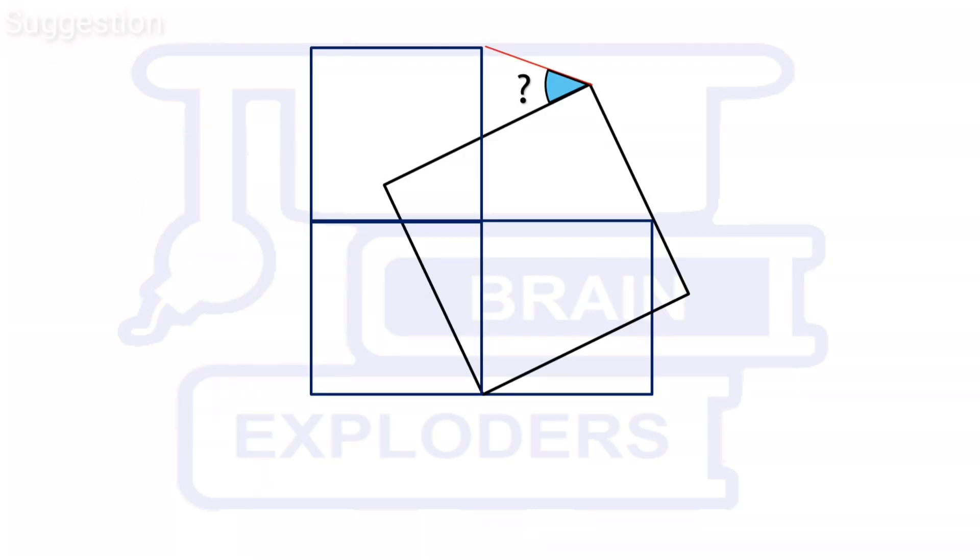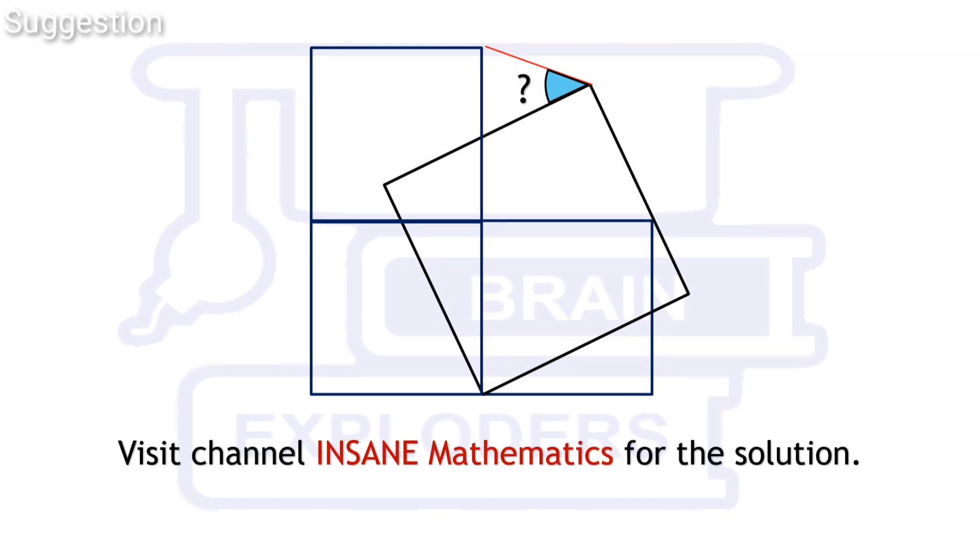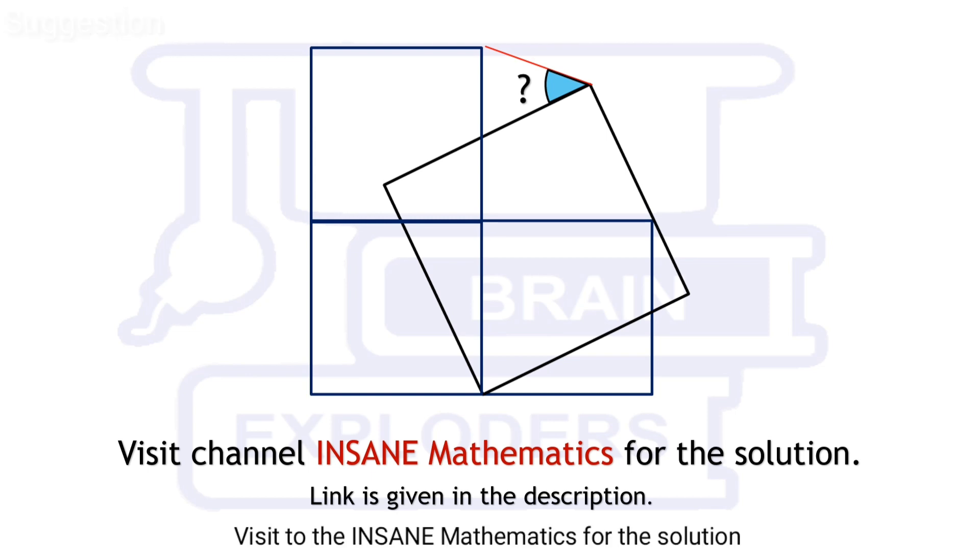There are four squares, three of which are identical. Identical squares are kept in L shape and fourth square is adjusted as shown on the screen. Find this blue angle. For more such interesting problems, we suggest you to visit channel Insane Mathematics. Link of the channel is given in the description.